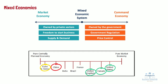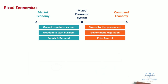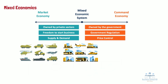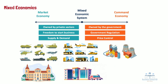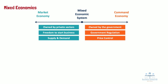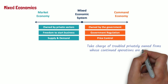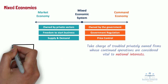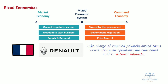Mixed economies have their own distinct features. Certain sectors are left to private ownership and free market mechanisms, while other sectors have significant state ownership and government planning. The most common government-controlled sectors include national defense, public transportation, energy, education, healthcare, and other essential industries related to social welfare. In mixed economies, governments sometimes take charge of troubled privately-owned firms whose continued operations are considered vital to national interests. For example, the French government took over Renault when it ran into serious financial problems, reasoning that the social costs of resulting unemployment were unacceptable, so it nationalized the company to save it from bankruptcy.